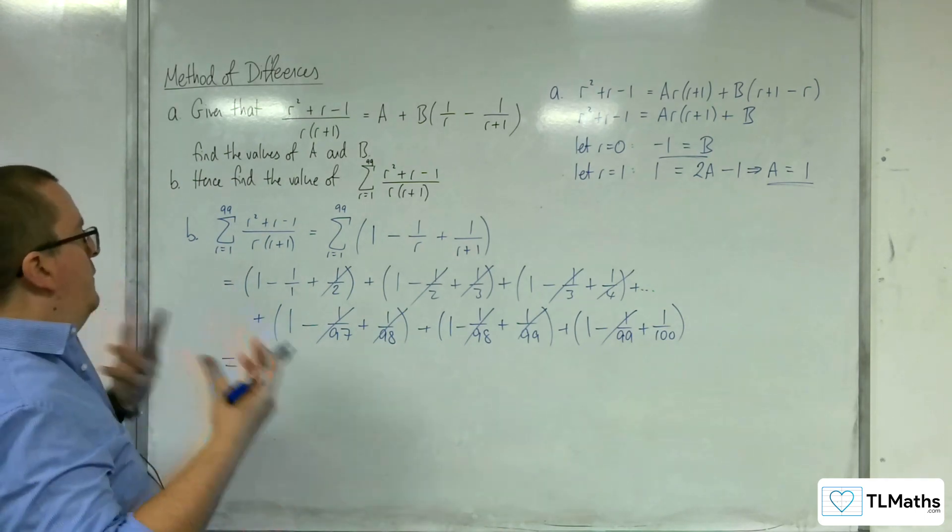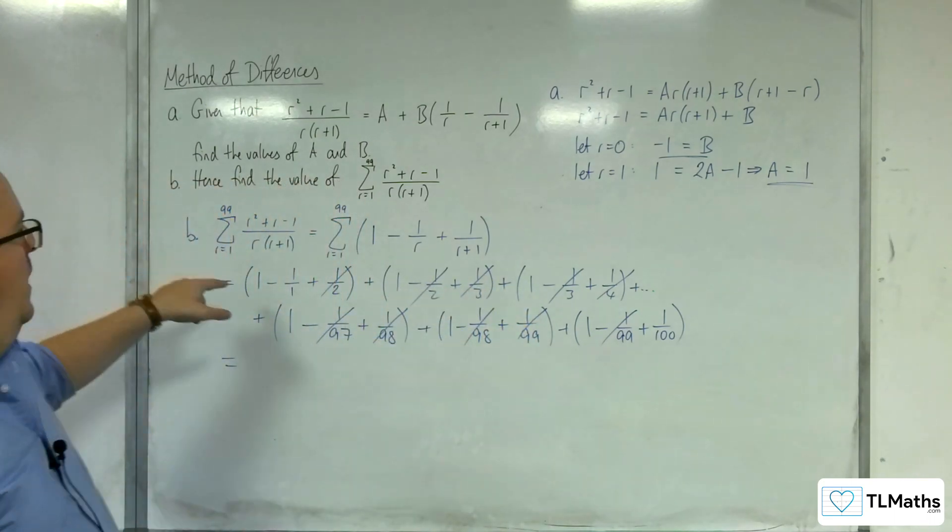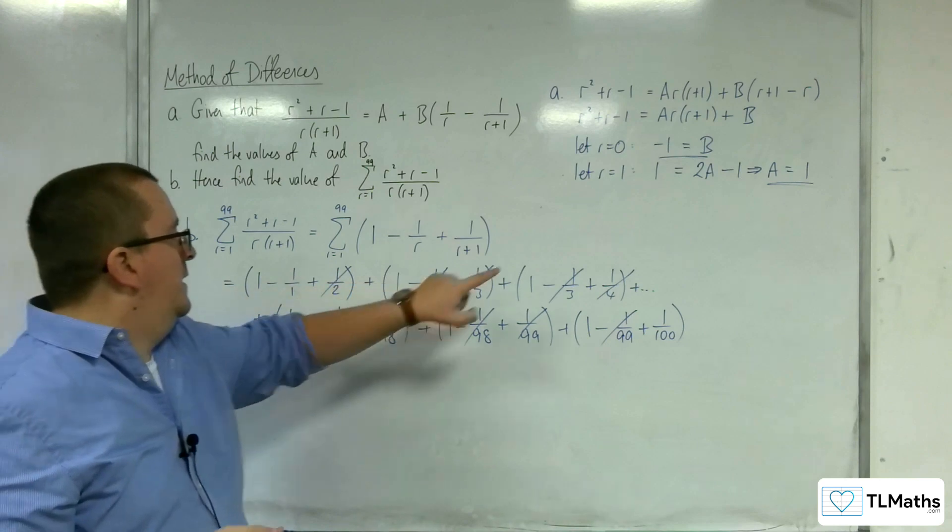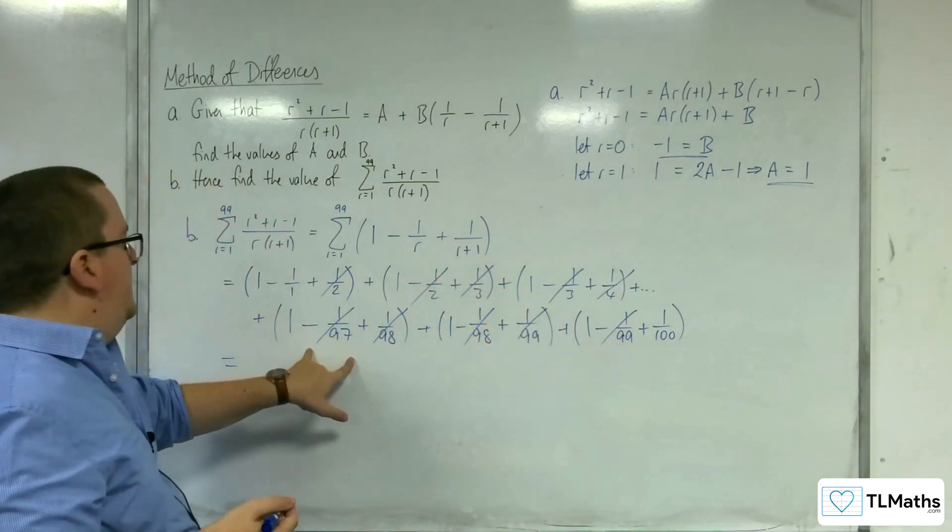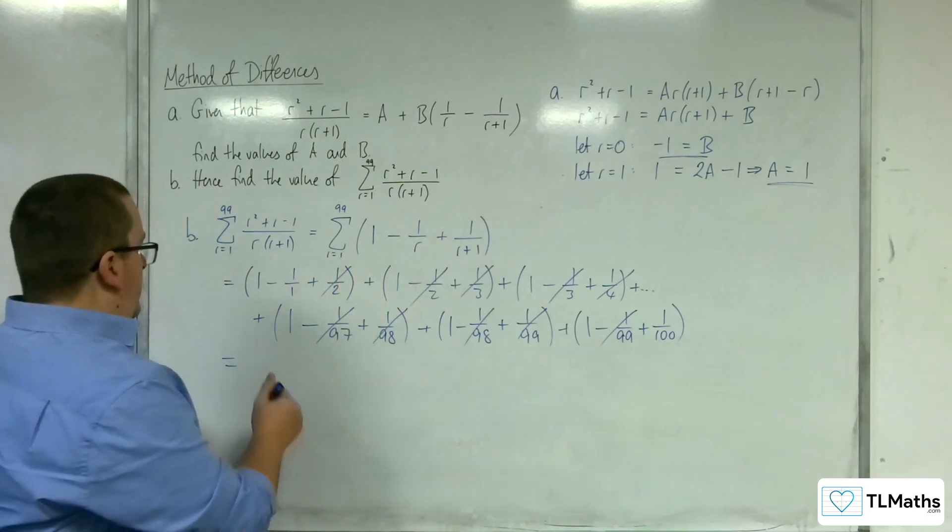Well, I've got 1 appearing first, second, third, 97th, 98th, 99th. So I'm having 1 appear 99 times.